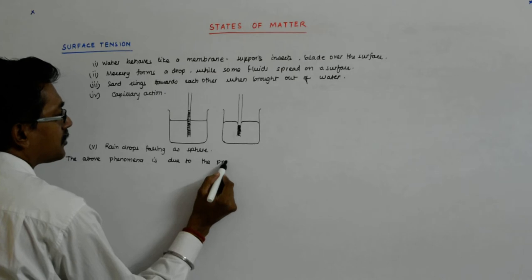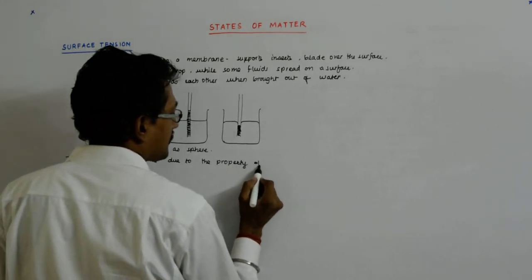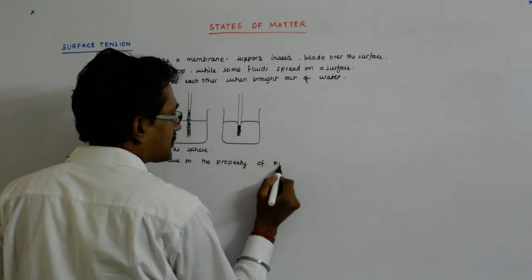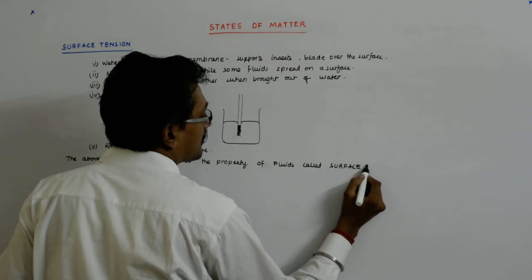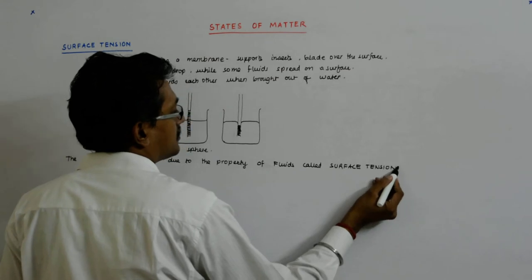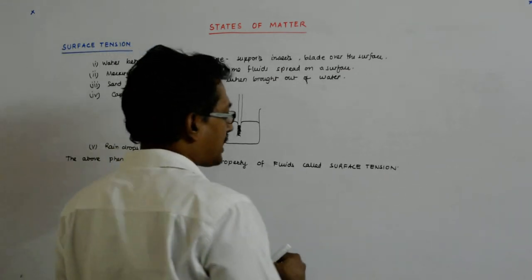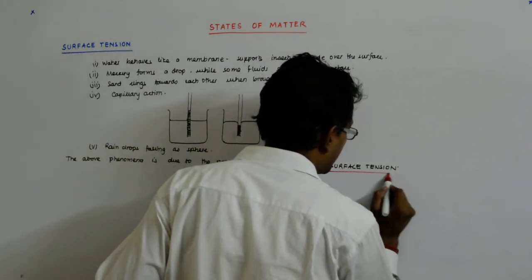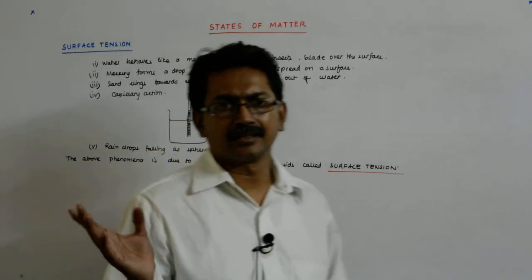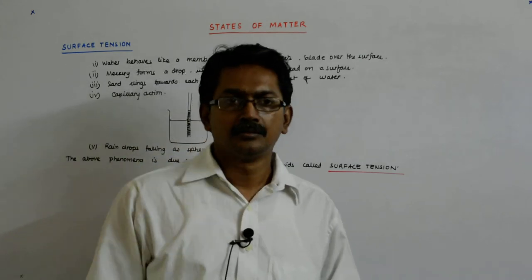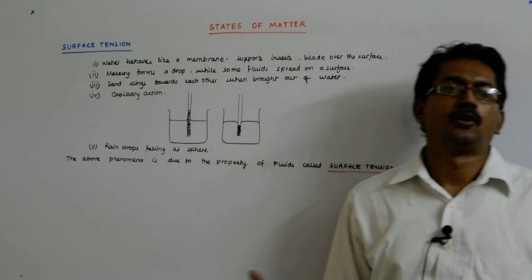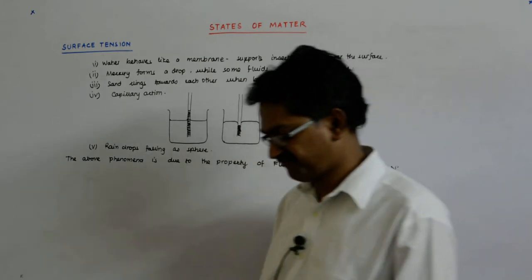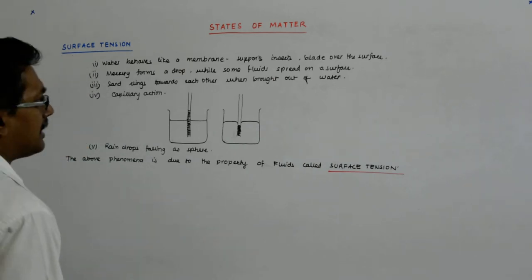All the above phenomena are due to the property of fluids called surface tension. I have cited these cases which are otherwise inexplicable, and they are all due to the concept of surface tension. Now let us try to understand what surface tension actually is.